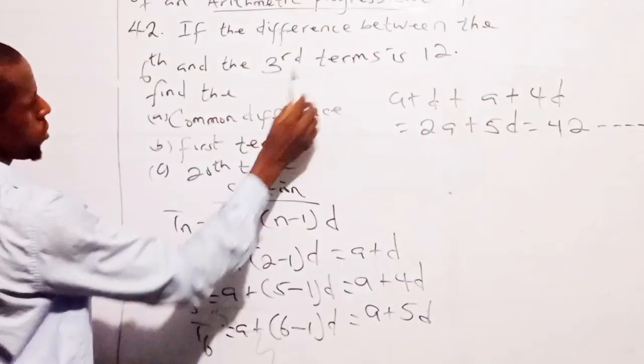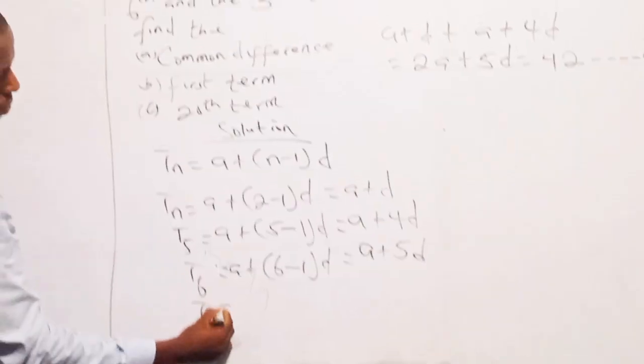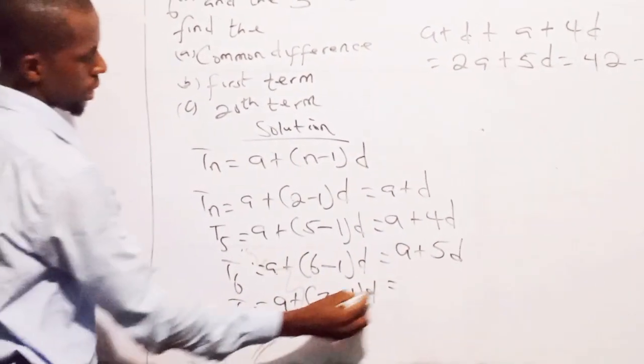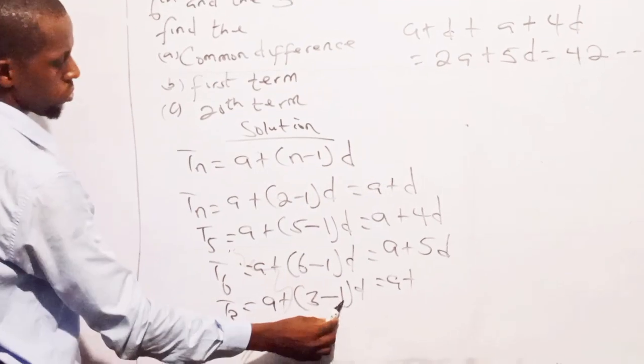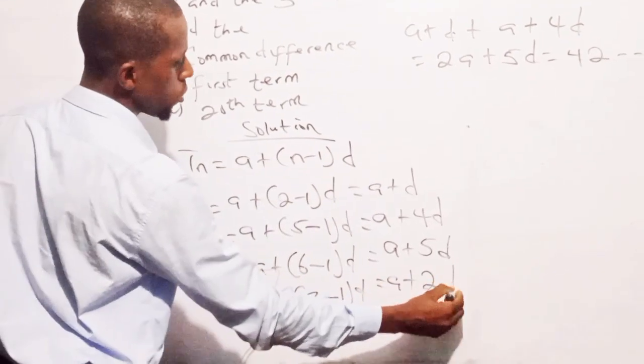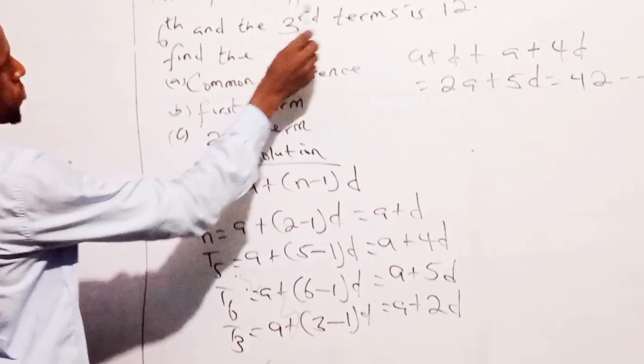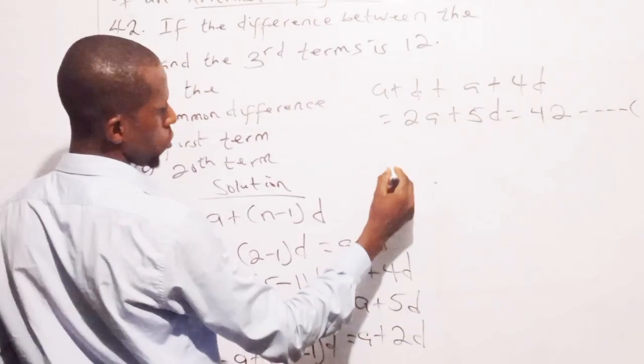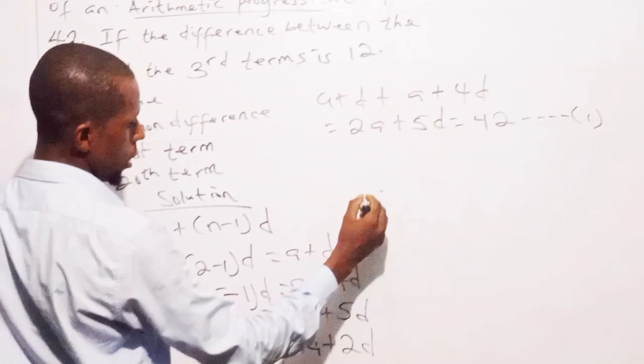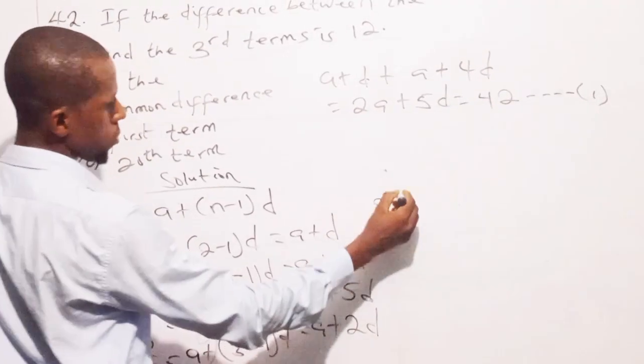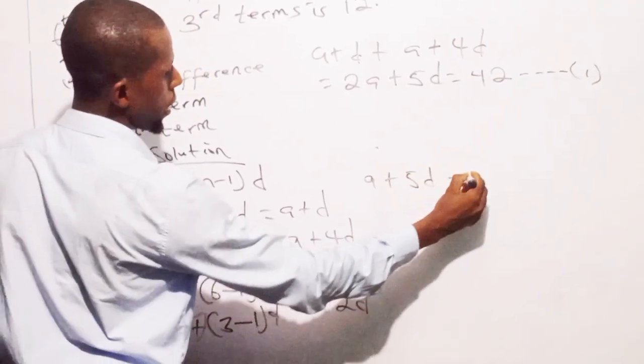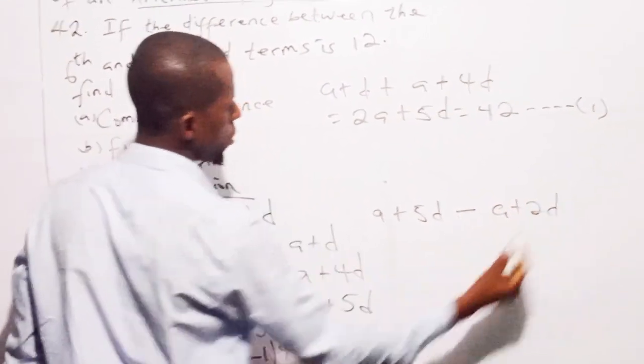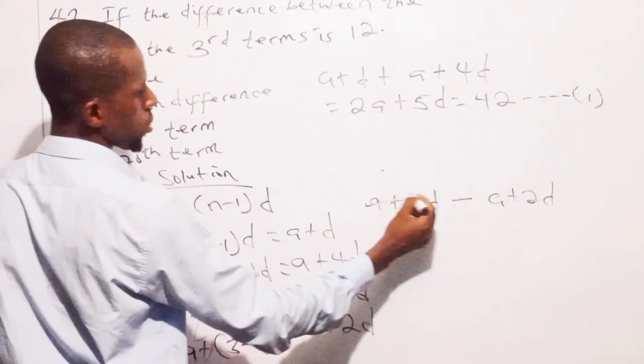So the third term, I'm having A plus 3 minus 1, D. So that gives me A plus 3 minus 1 is 2 times D, that is 2D. So what is the difference between the sixth and the third term now? So I say I have A plus 5D minus A plus 2D.